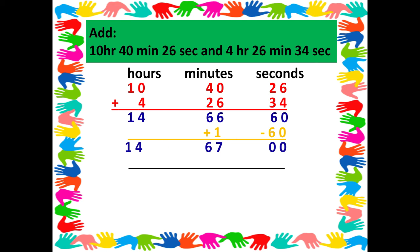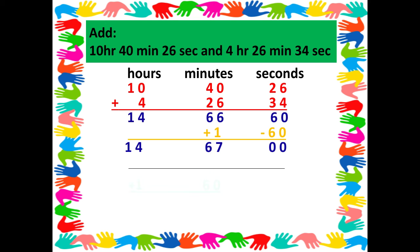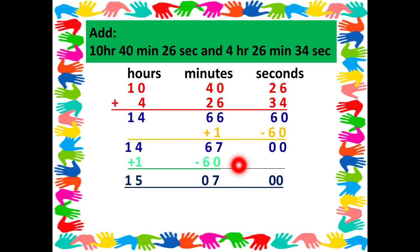Now children, we have added the seconds and get 0. Looking at the minutes, we get 67, which is more than 60. So we subtract 60 minutes from 67 minutes and add 1 to the hours. 67 minus 60 gives us 7 minutes, and 14 hours plus 1 gives us 15 hours.